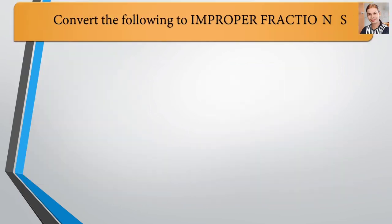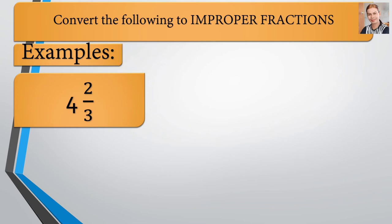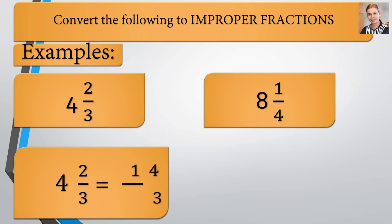How to convert mixed number into improper fraction? We have the examples here: 4 and 2 thirds, and we have 8 and 1 fourth. Let's have the solution.